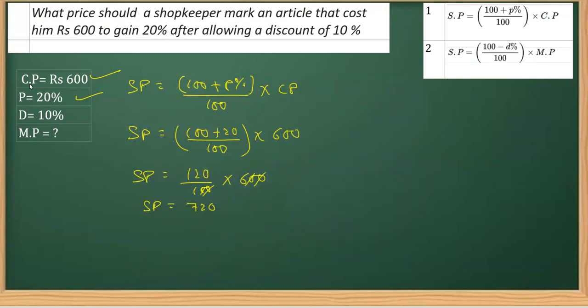As I said, for finding this mark price we'll be applying this formula or the relation here. Now let's write down the formula. The formula here is SP is equal to 100 minus D percent over 100, that multiplied by mark price.